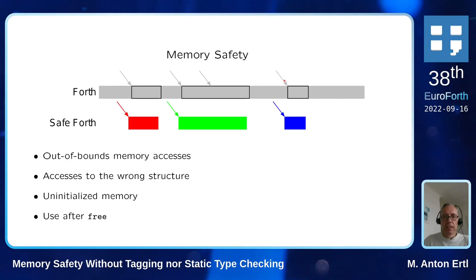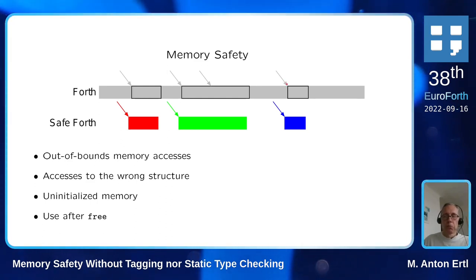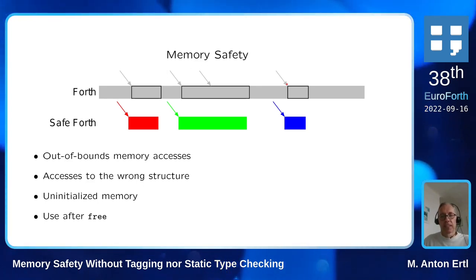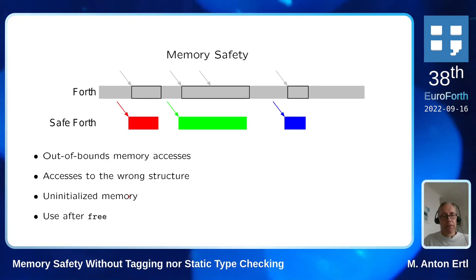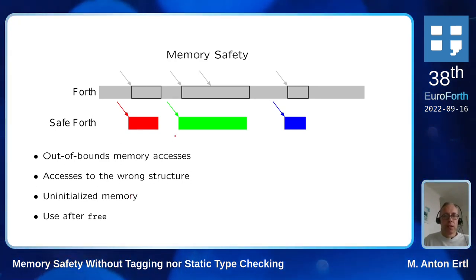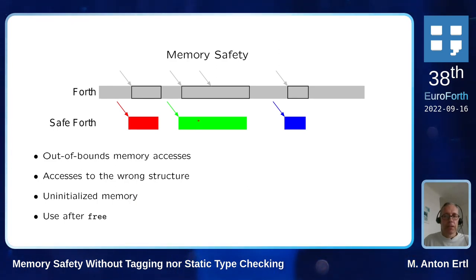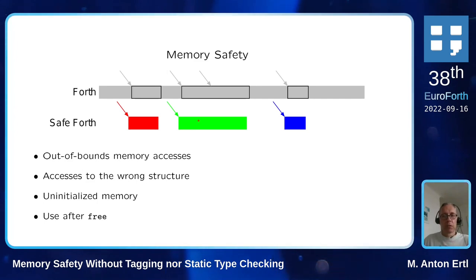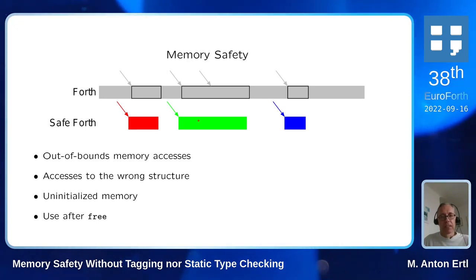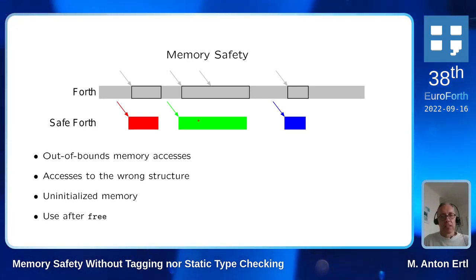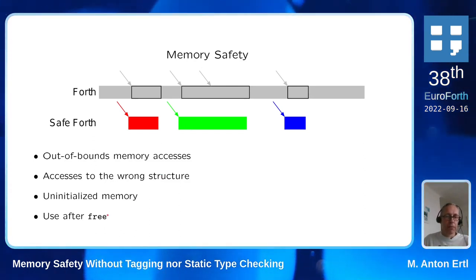We also don't want access to the wrong structure — if we have an address to some list, we don't want to treat it as a tree node. We also don't want uninitialized memory: if inside an object we have something used as a reference to another object, we don't want it to hold garbage from some earlier execution. We want it initialized to a known, invalid value, so typically we zero it, because zero is not a valid reference.